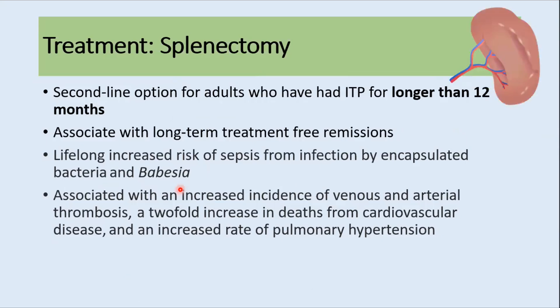Splenectomy is a second-line option for adults who have had ITP for longer than 12 months. We need to wait 12 to 24 months because many adults with ITP can go into remission in that time. Splenectomy is associated with long-term remission, which is an advantage. However, there is increased risk of sepsis from infections by encapsulated bacteria like Streptococcus pneumoniae and organisms like Babesia, as well as increased risk of venous and arterial thrombosis, cardiovascular events, and pulmonary hypertension. Therefore, splenectomy should be used for selected patients only.